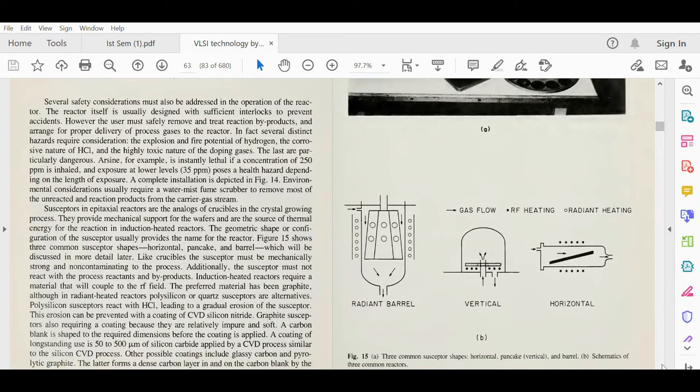The toxic gases are particularly dangerous. For example, arsine is instantly lethal if a concentration of 250 ppm is at hand. We talk about this ppm in a very general term in our daily life when we talk about the pollution of Delhi. You might have seen a lot of examples in the news channels showing this ppm range.